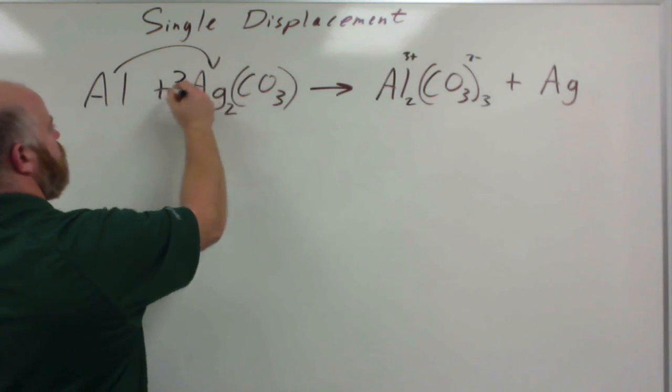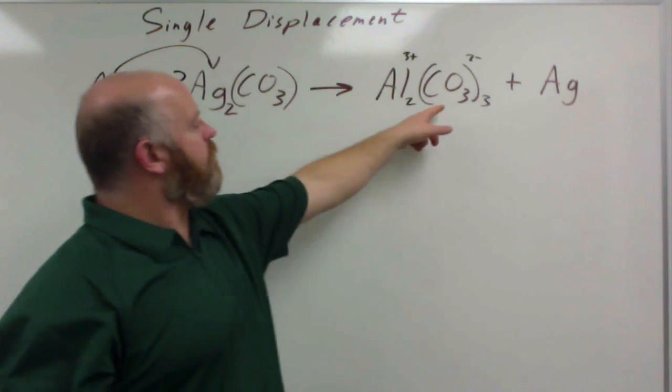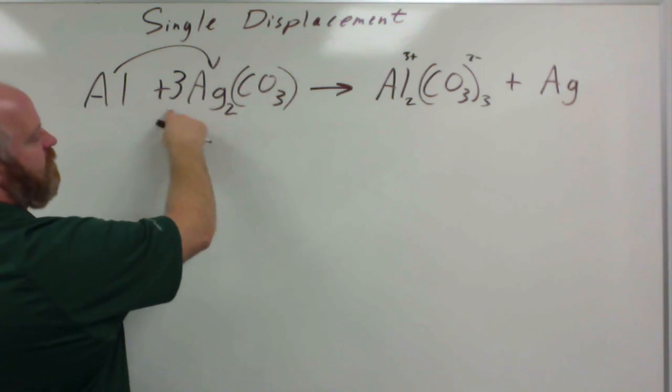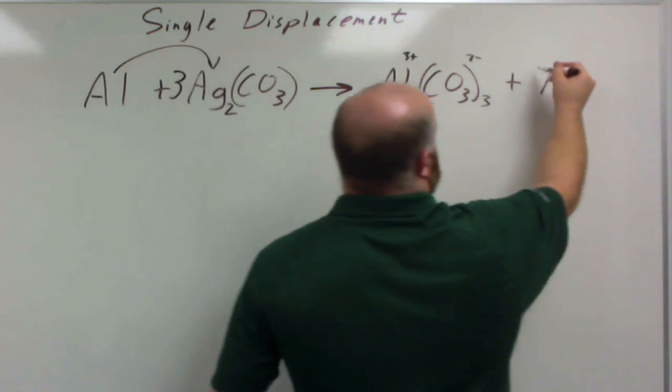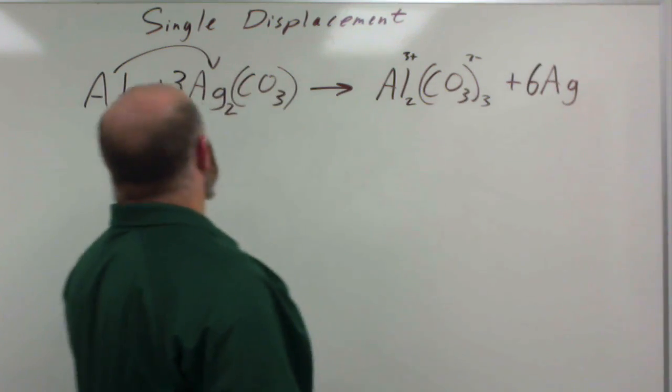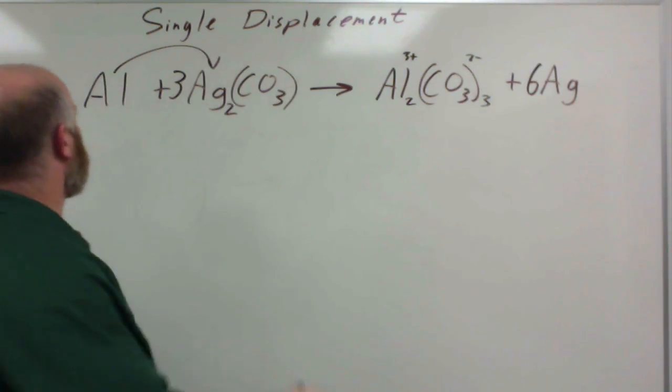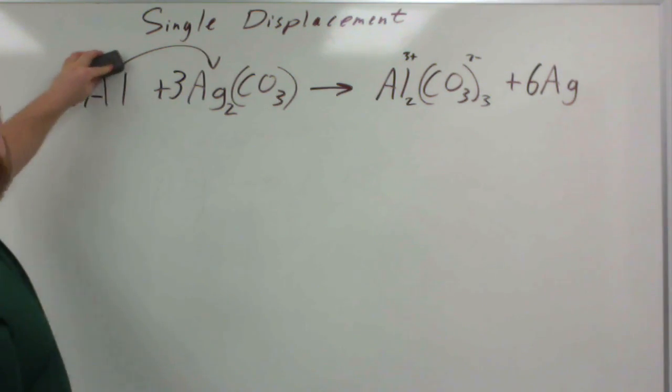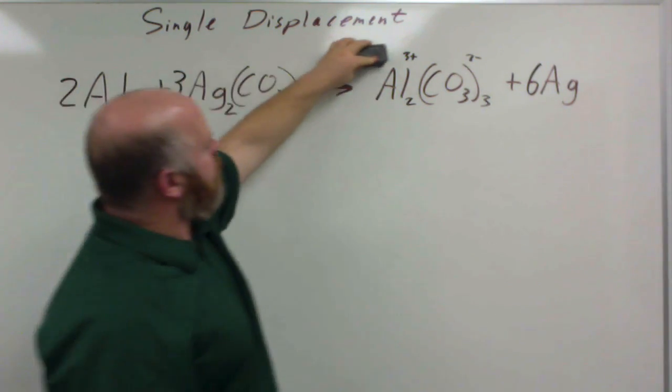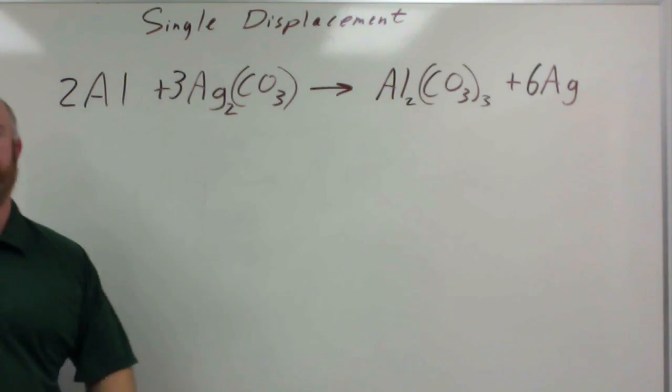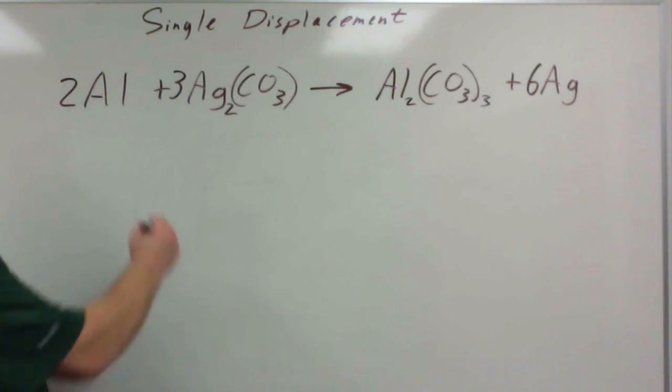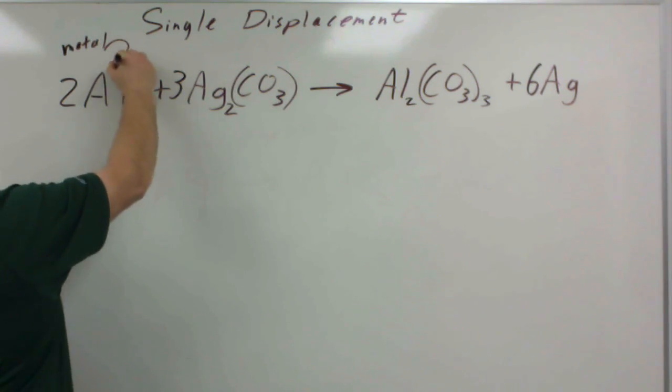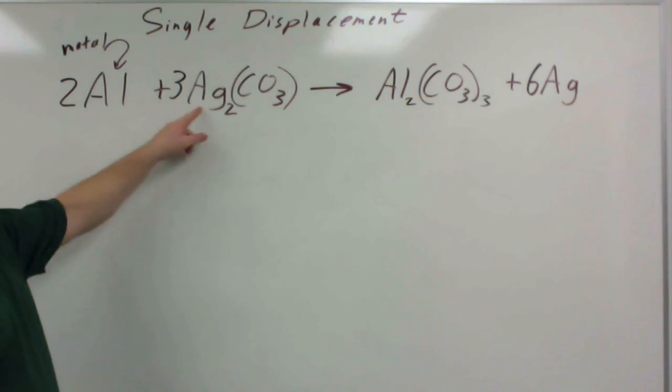So I want to start by getting my carbonates right, so my carbonate, I need to have 3 of those, so now I have 3 carbonates. I now have 3 times 2 for 6 silvers, so I'm going to put a 6 over here for my silvers. And I still have 2 aluminums, so I need to have a 2 here for my aluminums. Erase some of the extra junk that we don't need, and there's our example of a single displacement when we have a metal that's by itself, it's going to replace the other metal.